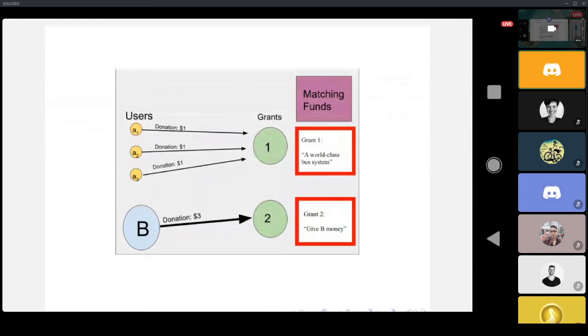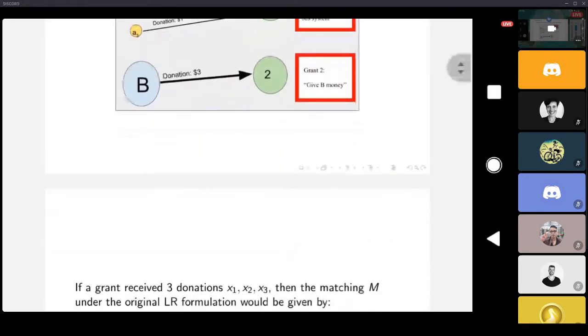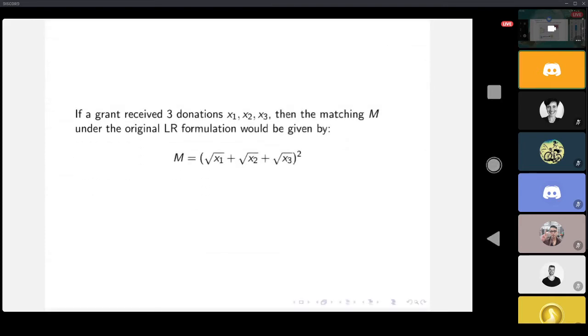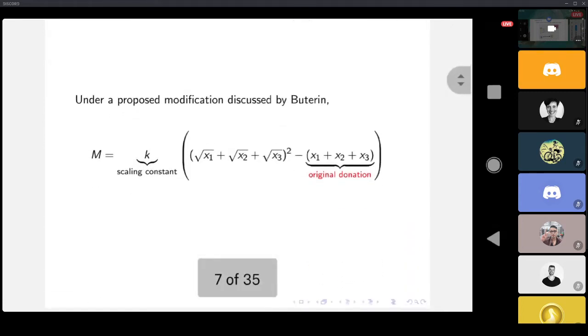Last time we looked at this setup where there were three A users who were all contributing towards a worthy goal, and there was a larger B user who was the only person contributing to their grant. In the original formulation, B would still get matching funds out of the liberal radical formula. To combat that, you don't want B to get money because their grant might be serving themselves. So to address that, you look at the formula carefully.